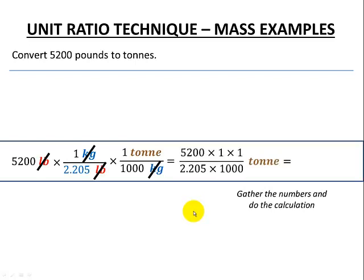And now I can gather my numbers and do my calculation. So 5,200 times 1 times 1 divided by 2,205 times 1,000. And again, you may choose not to write these ones there. Perform the calculation. And our final answer is 2.358 tons. So our 5,200 pounds is now equivalent to or equal to 2.358 tons to 3 decimal places.